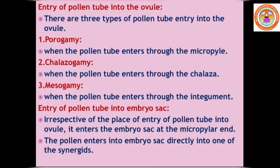There are three types of entry of the pollen tube into the ovule. The first is porogamy, where the pollen tube enters through the micropyle. The second is chalazogamy, where the pollen tube enters through the chalaza. The third is mesogamy, where the pollen tube enters through the integuments.